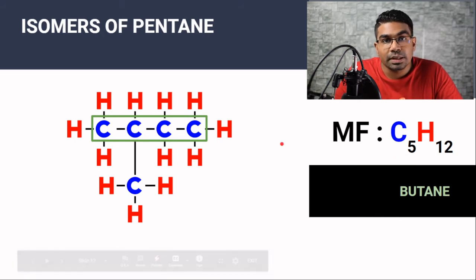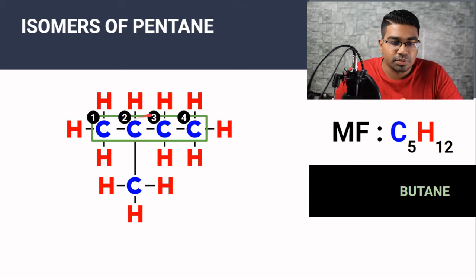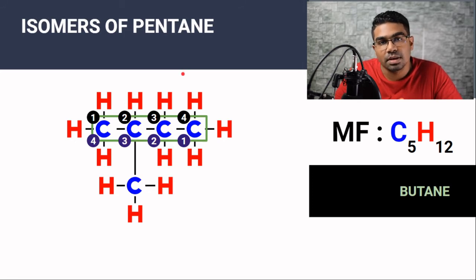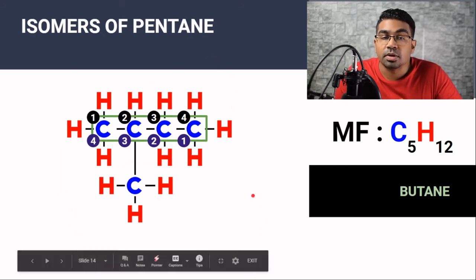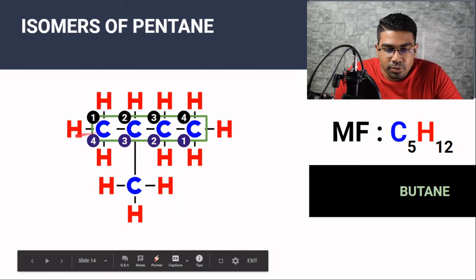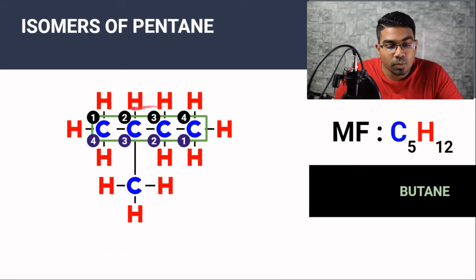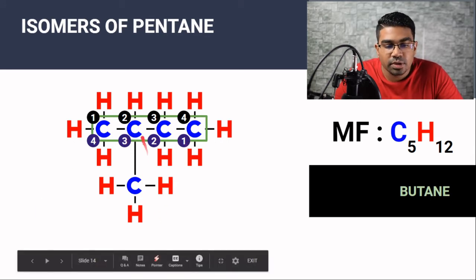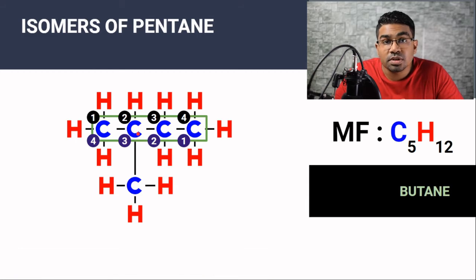Next we need to number the carbon atoms. We can start from either end of the chain — starting from the left gives us 1, 2, 3, 4, and we can also start from the right. The reason we assign numbering to the carbons in the longest chain is so that we can accurately represent the position of the branches or functional groups. In this case we are dealing with the position of the branch.